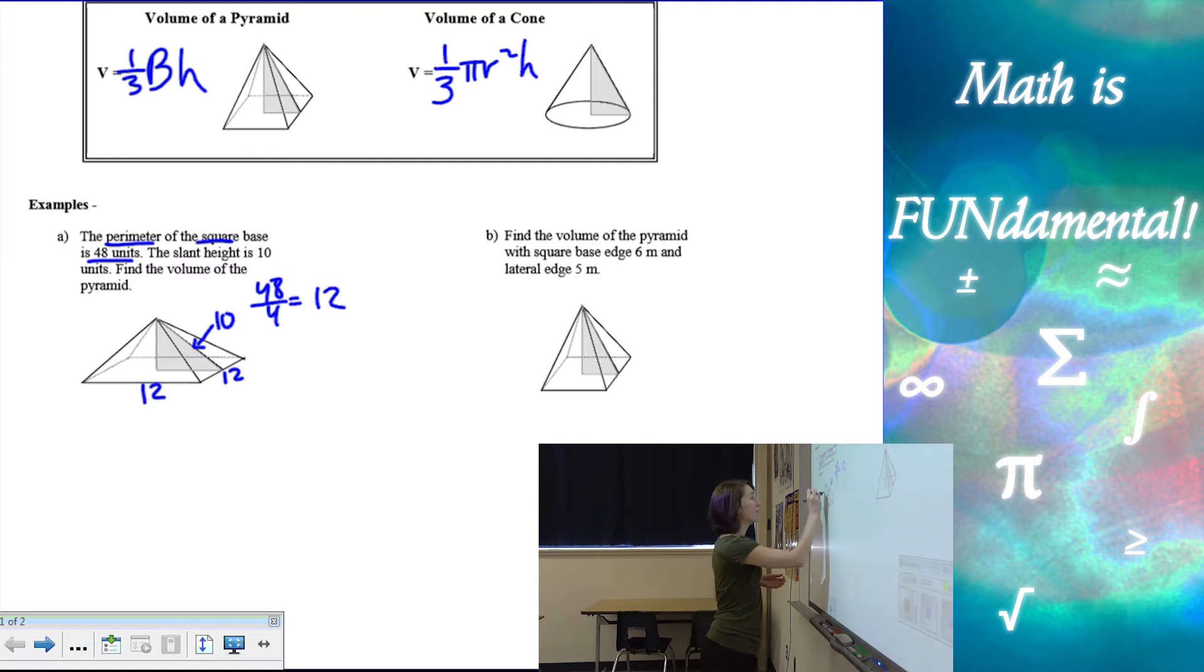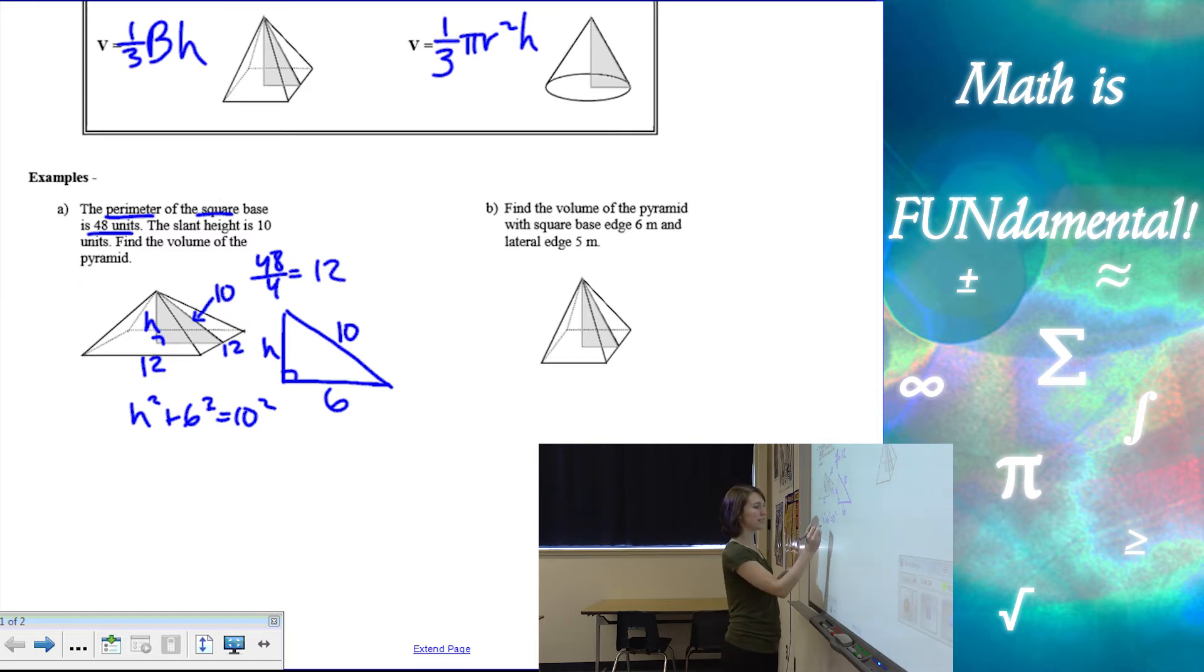So in order to get the volume, we have to find the height of the pyramid, which goes from the vertex of the pyramid down to the center of the base. It's perpendicular. So if you look, we have a little right triangle here. It's shaded on the picture here, and we have h, 10, and then this side is actually half of the side length. So we can do Pythagorean theorem. h² + 6² = 10², and 100 - 36 is 64, so h is 8.